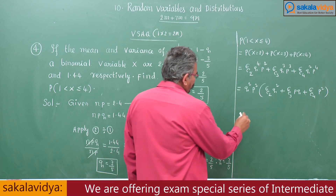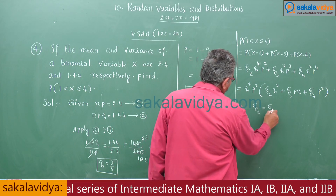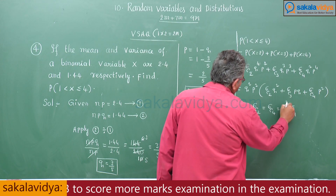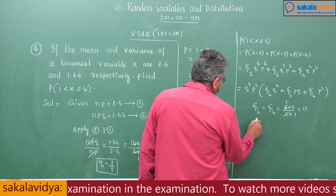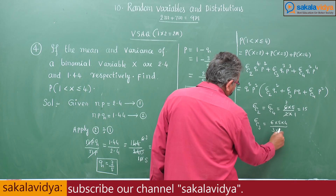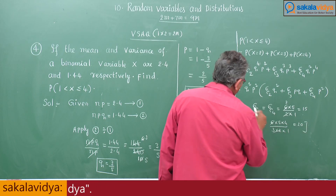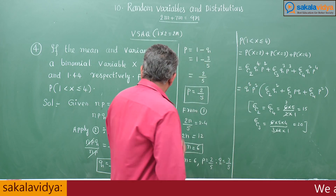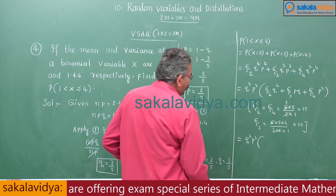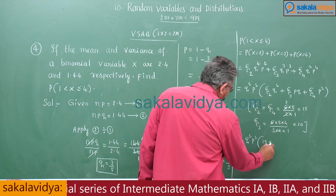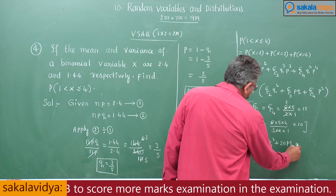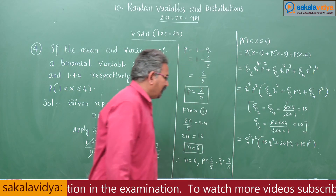Computing the coefficients: 6C2 = (6×5)/(2×1) = 15, 6C3 = (6×5×4)/(3×2×1) = 20, and 6C4 = 15. So the expression is Q²P² (15Q² + 20PQ + 15P²).